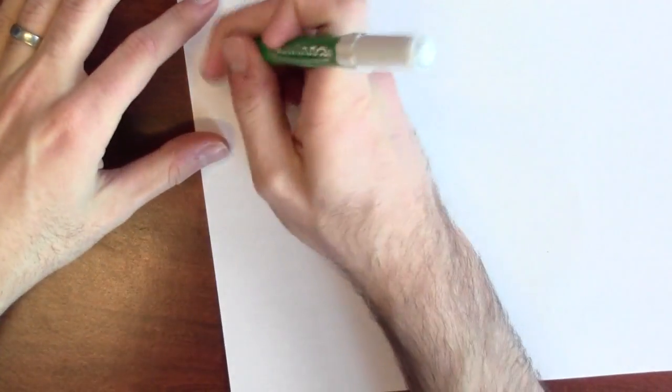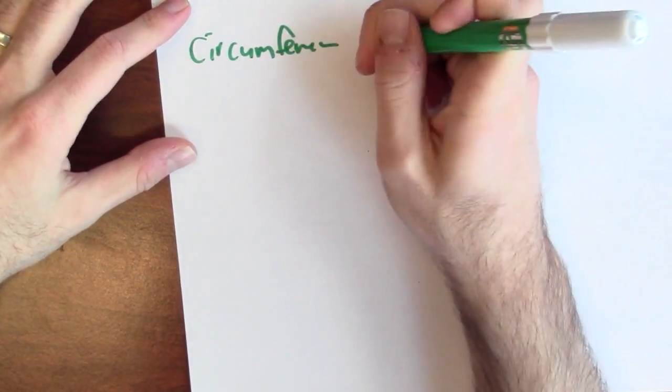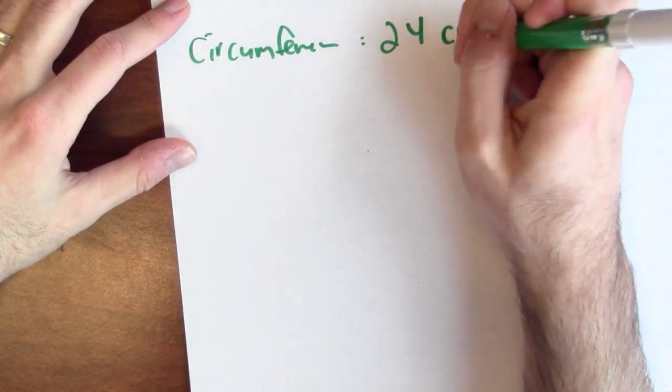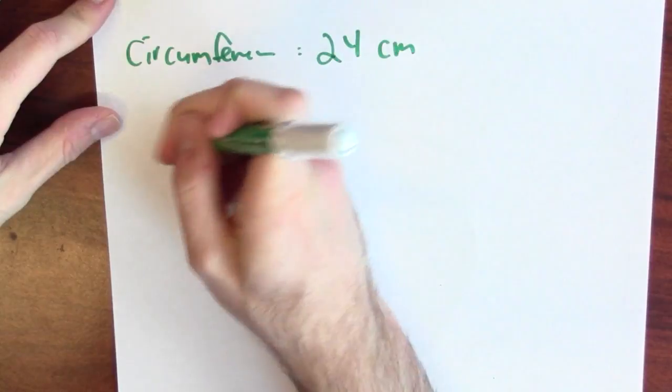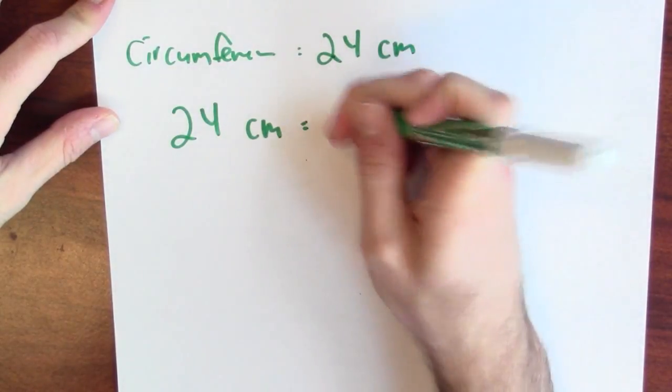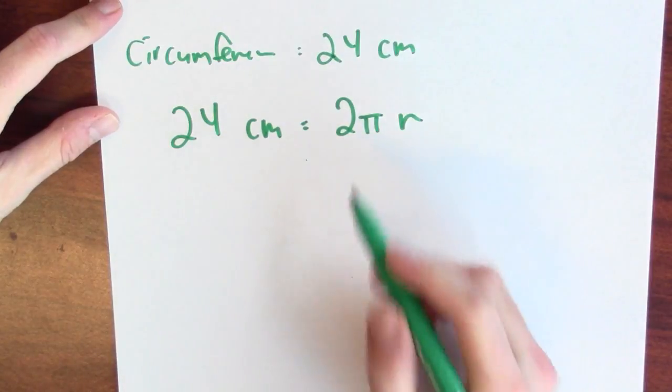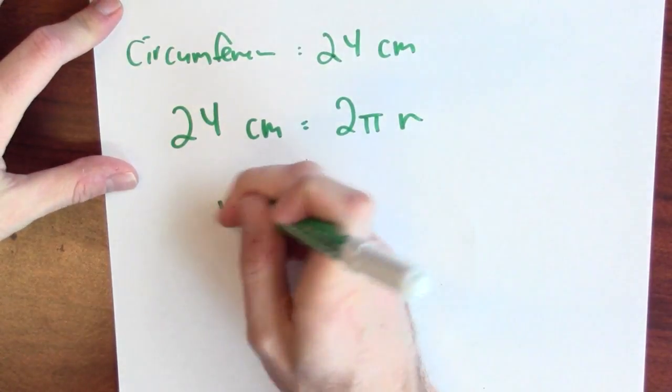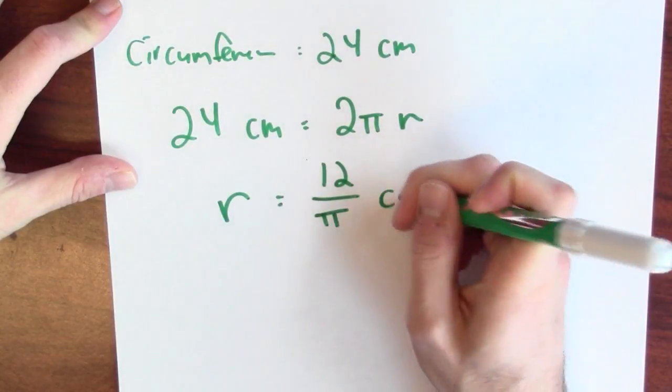So the circumference of the orange is 24 centimeters. What does that tell me about the radius of the orange? Well, that circumference will be 2π times the radius of the orange. So if I divide both sides by 2π, I get that the radius of the orange is about 12 over π centimeters. How much rind is there on this orange?